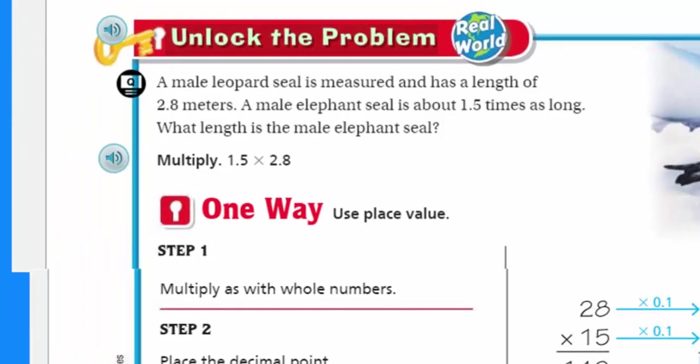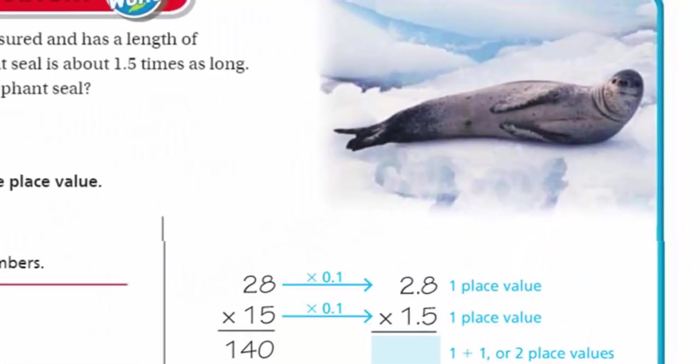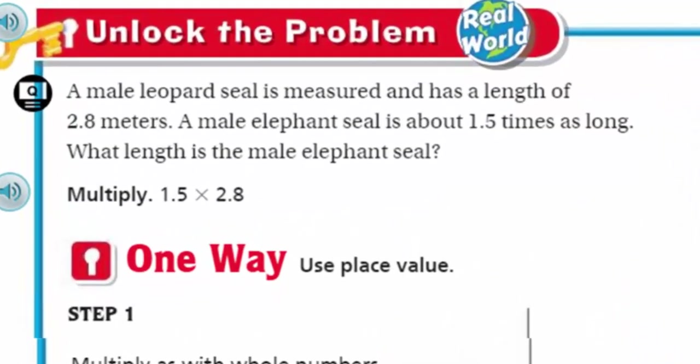Now I think we need to unlock the problem. That's right, it's real world, baby. Look at this guy. Come on, camera guy. Thank you. Yes, look at that guy. What is he? He's a male leopard seal. He looks cute. Why are those things a pretty vicious guy? They are carnivorous, they seem like top predator kind of animals. Let's look at what the problem says. It says a male leopard seal is measured and has a length of 2.8 meters. A male elephant seal is about 1.5 times as long. What length is the male elephant seal?